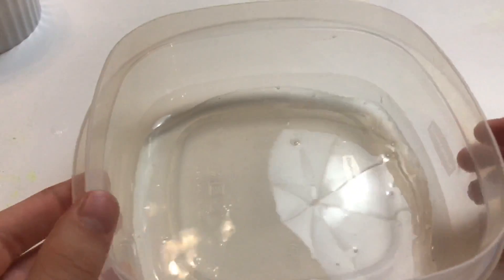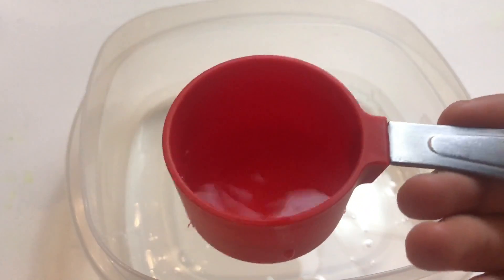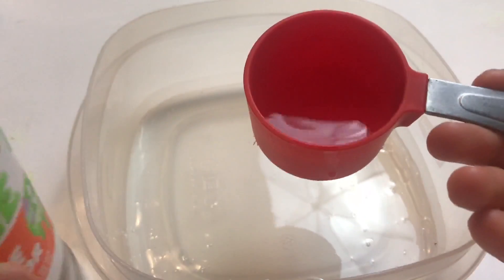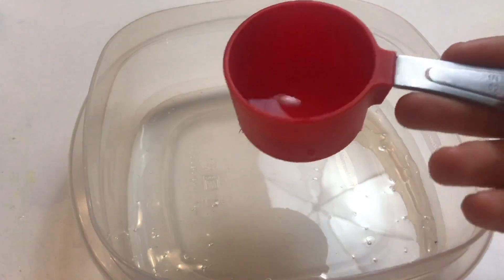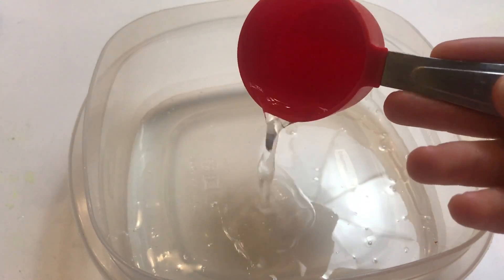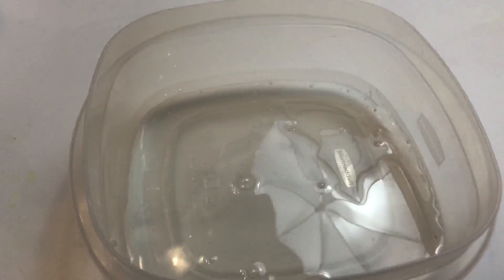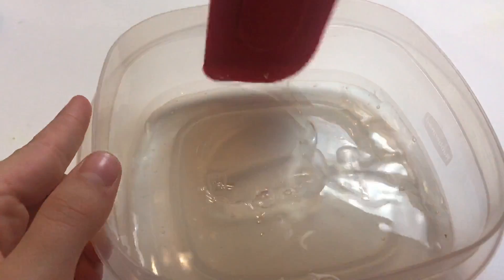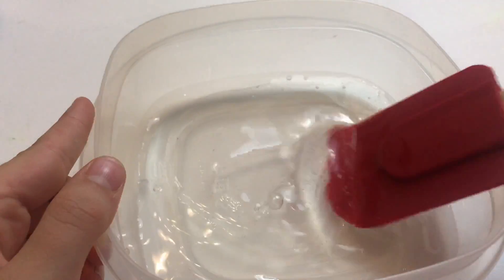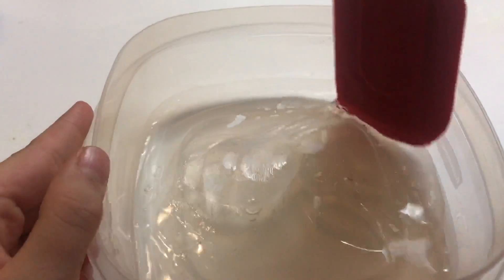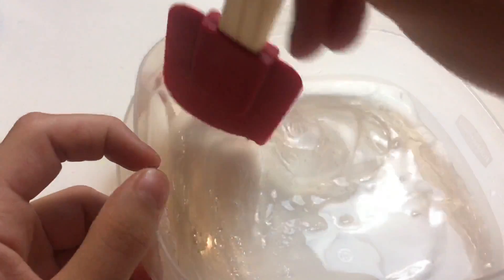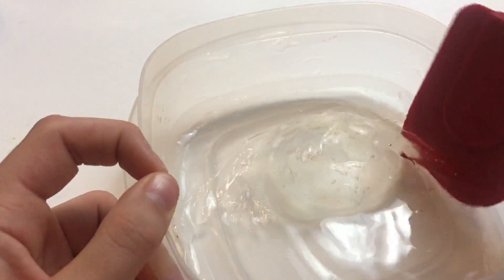All right so now we have our glue in the bowl. It calls for one ounce of activator, the Nickelodeon activator, eighth of a cup. So I'm just gonna pour that in, mix it around slowly so the air bubbles... oh that's nice, it's really nice.